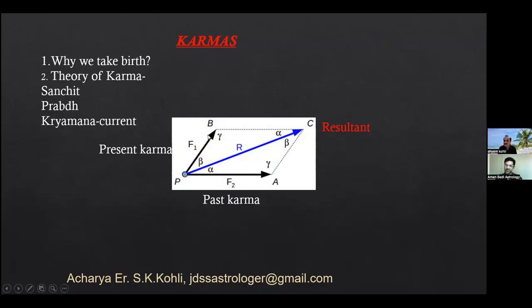This means that life runs on the resultant of these two vectors. This vector is fixed, past karma. This vector we can change and the resultant will change. So this means it is not deterministic. Events are not deterministic, but it can be changed to some extent.